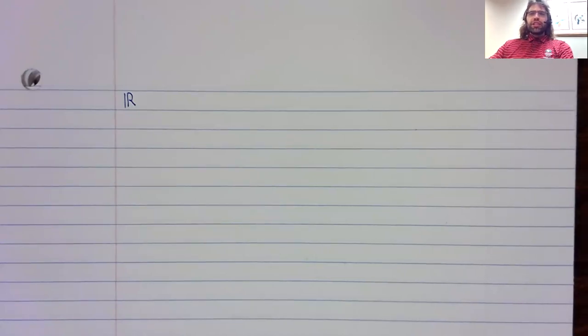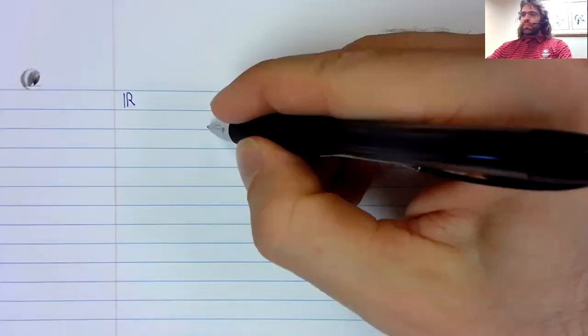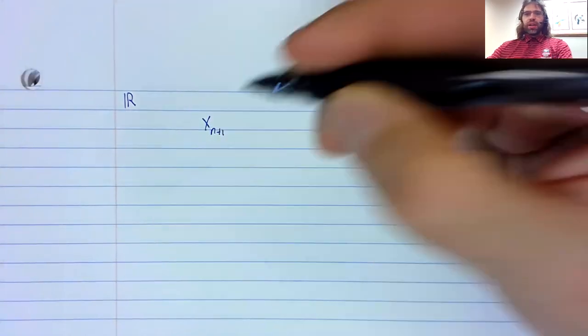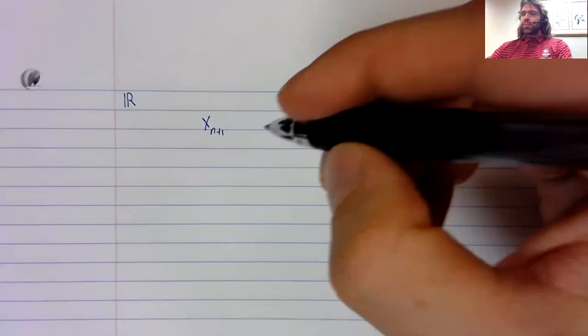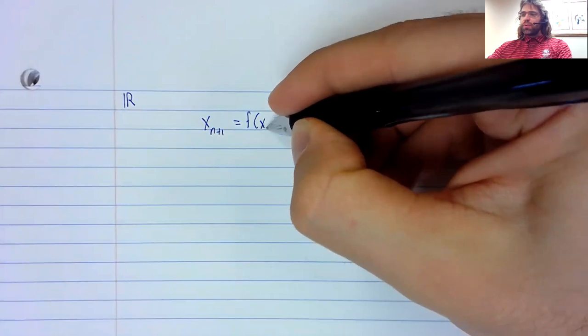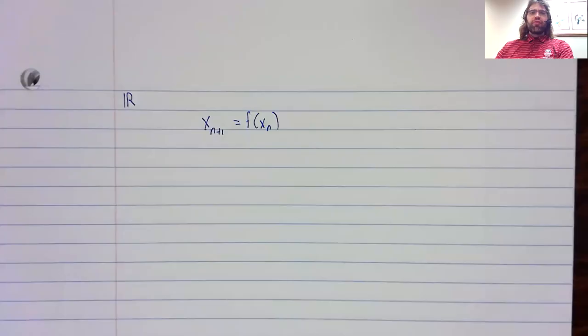For now, we're just looking at the real numbers, and these dynamical systems have the form x_n+1 = f(x_n).